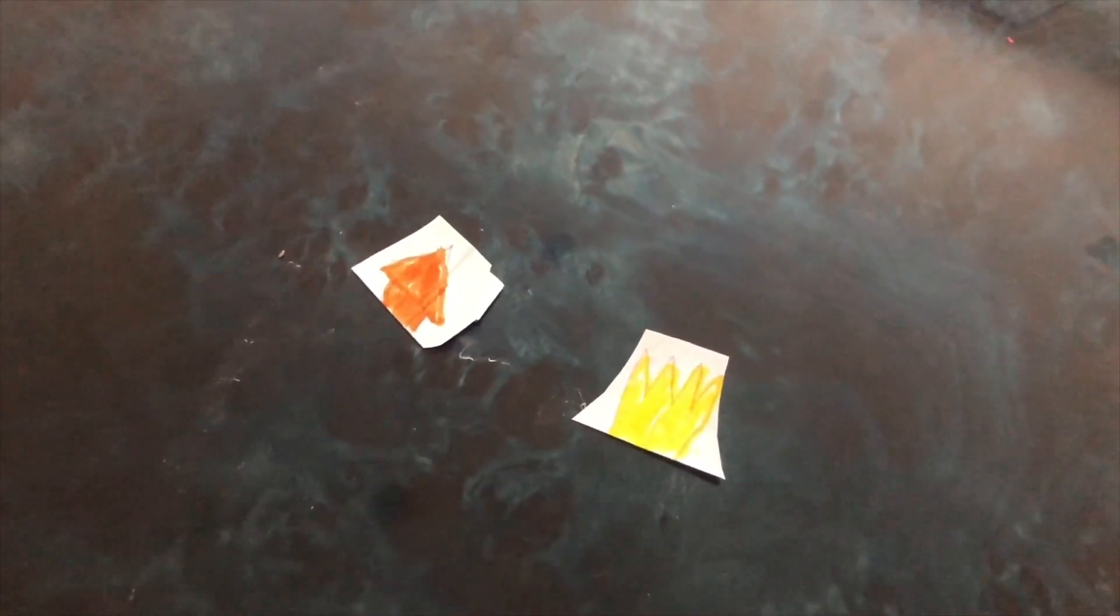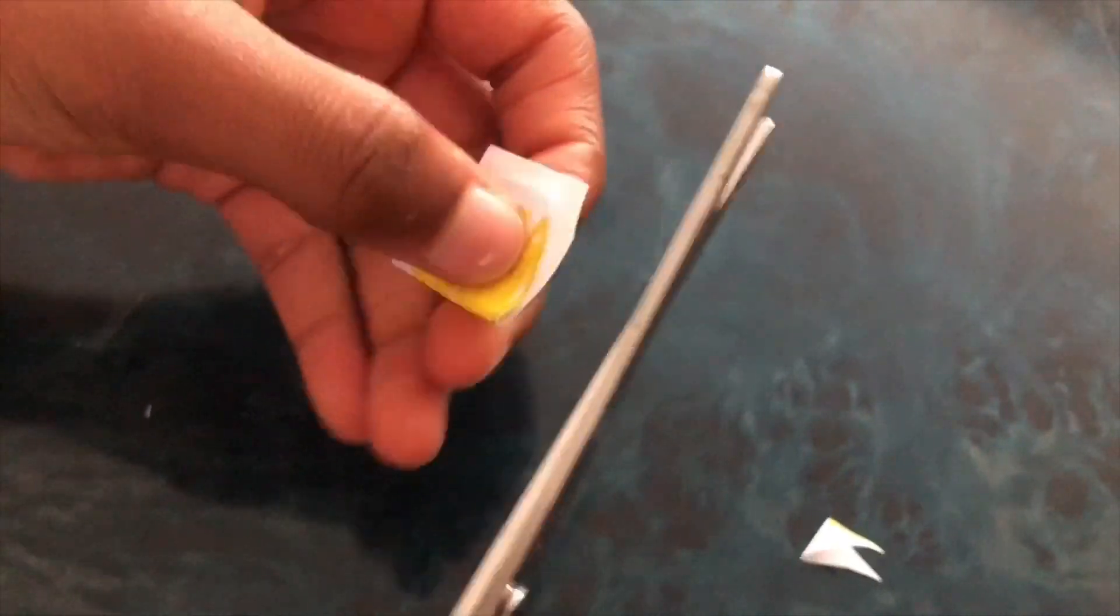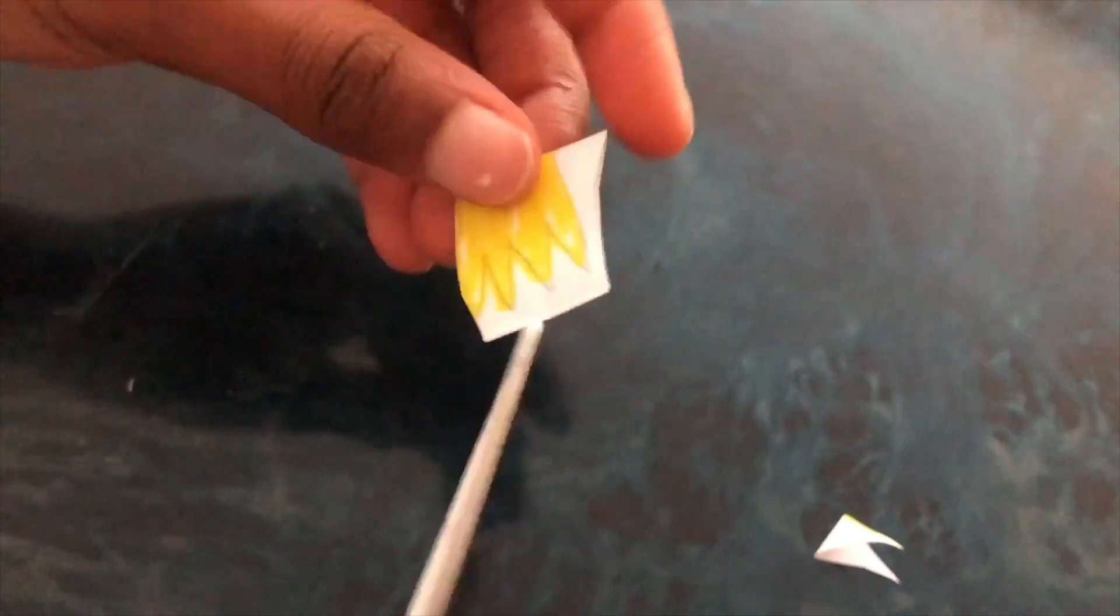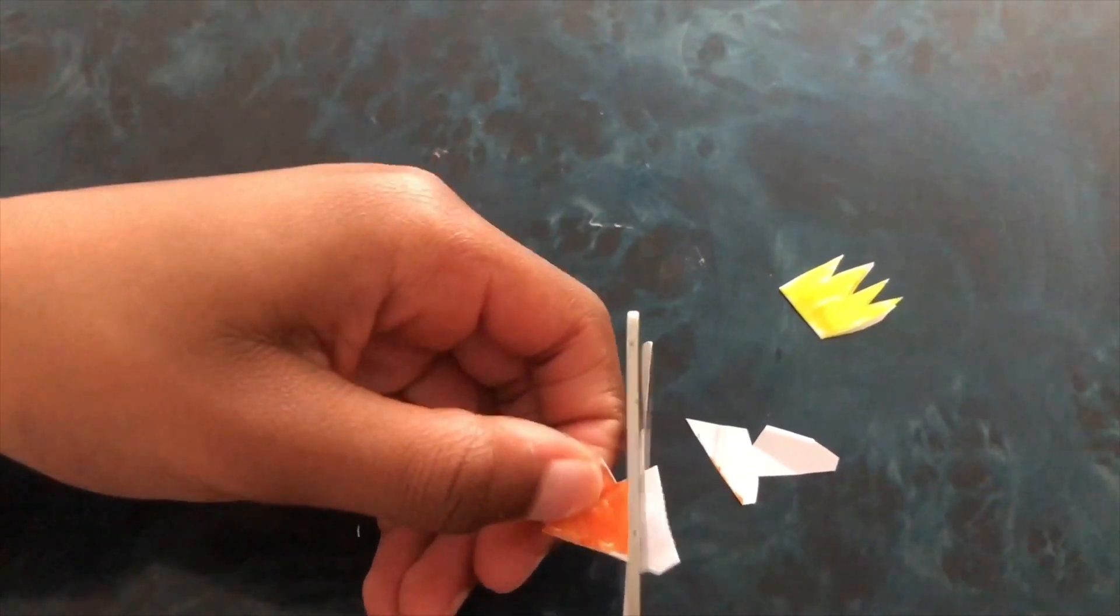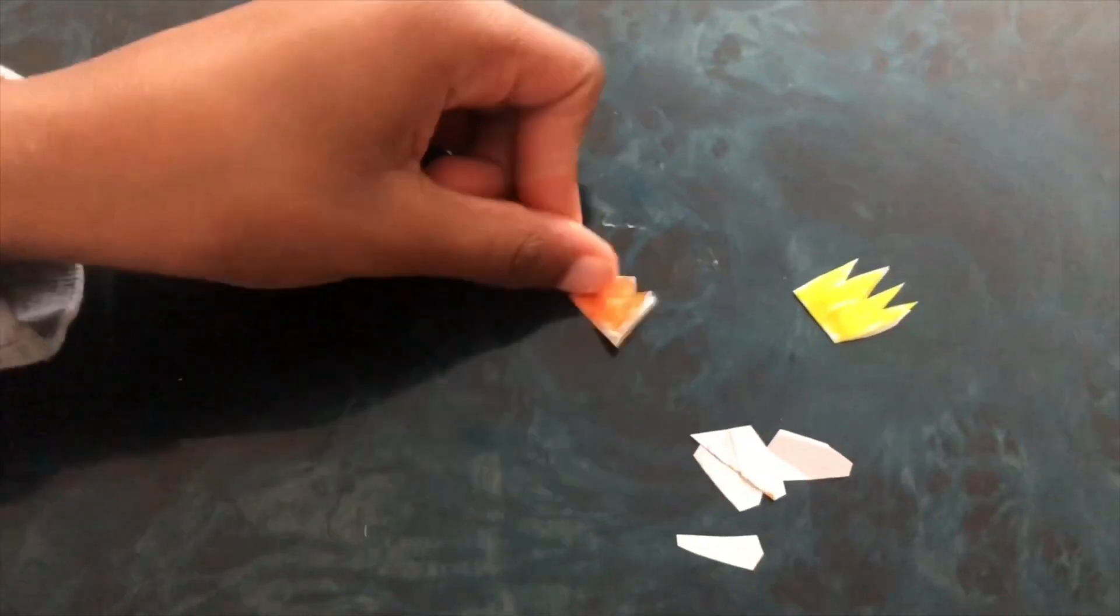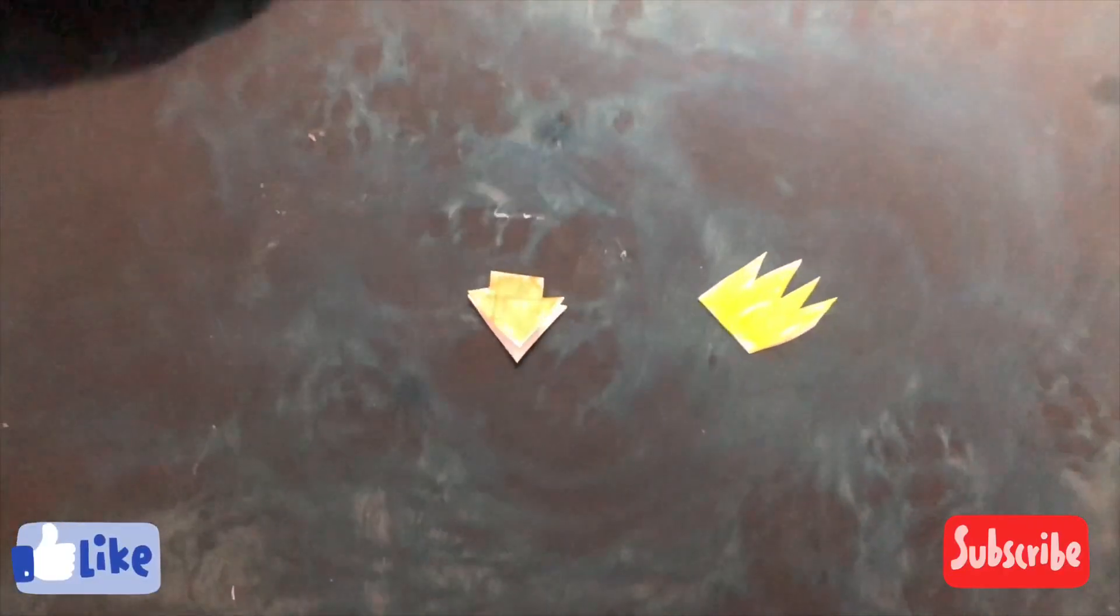Now let's cut them out. So now that we've cut these out, this is the beak and this is the hair.